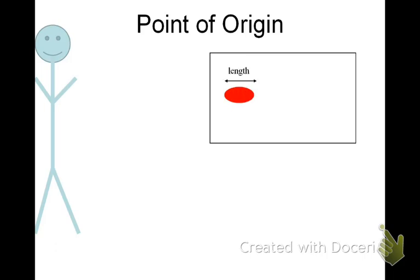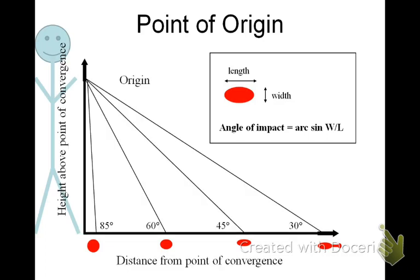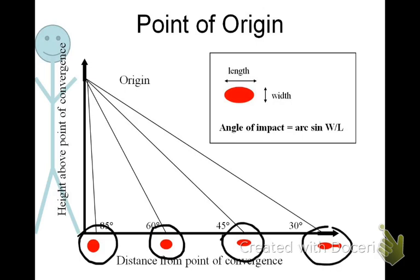To show what the point of origin looks like in practice, we measure the length and the width, then take the arc sine — sine to the minus one — of width over length. We plot this out on graph paper. A nearly round drop means the angle of impact is almost 90 degrees; the smaller the angle of impact, the more oval the blood spatter. So we plot those out and determine the angle of impact.